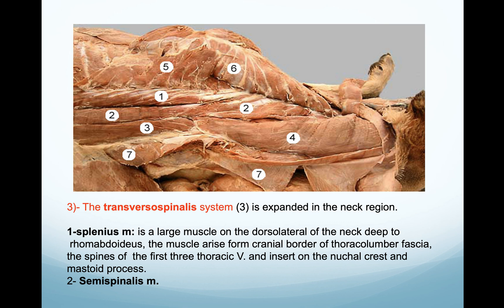After that we have the transverse spinalis system, which is expanded in the neck region - a very wide muscle found there. This is the splenius muscle, which is a dorsal lateral muscle of the neck region. To see this muscle, we have to reflect the serratus ventralis and also the rhomboideus muscle, which is attached to the dorsal border of the scapula.